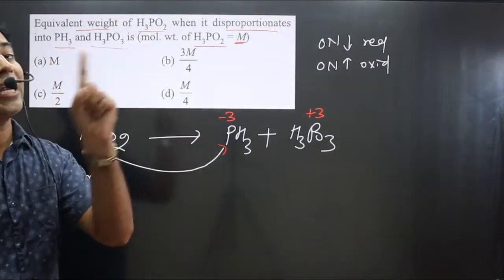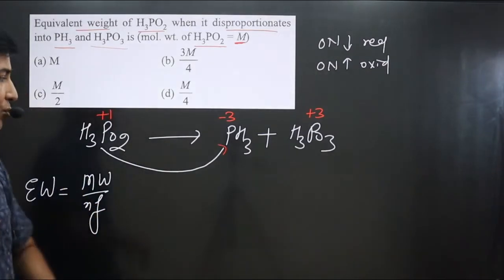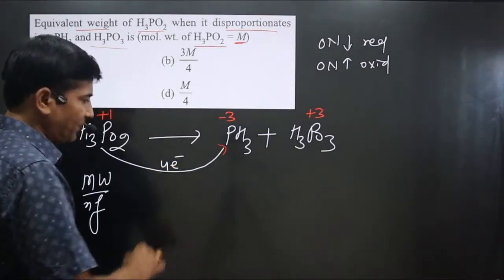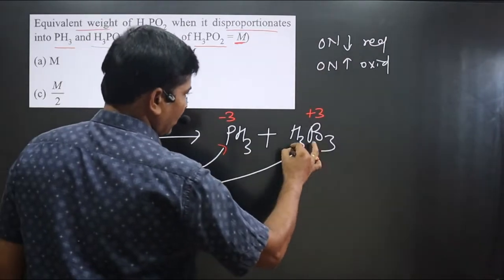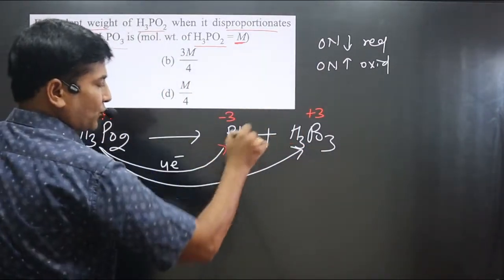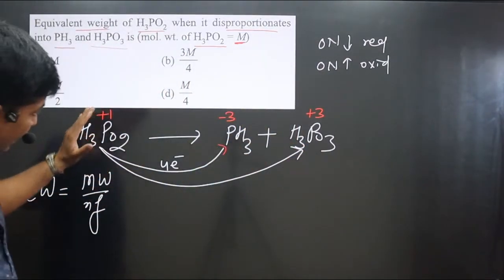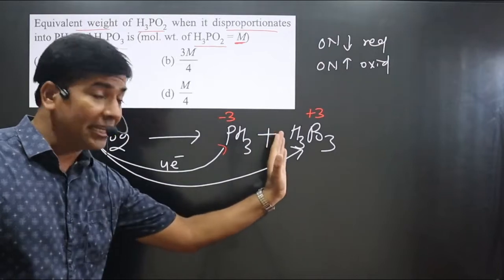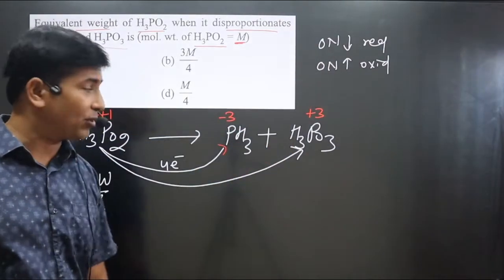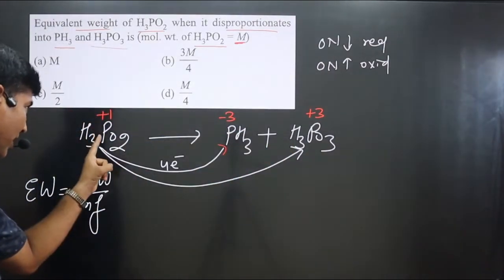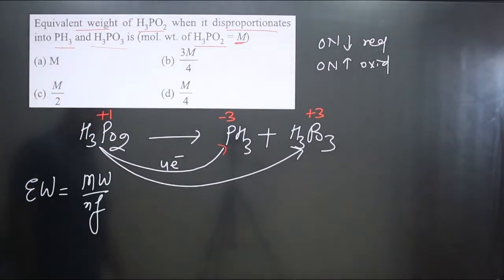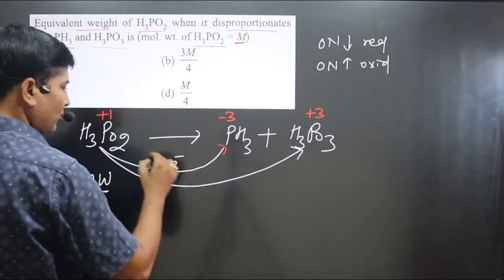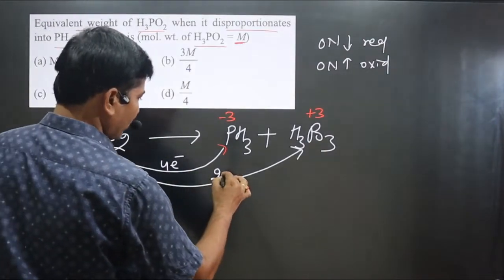The difference in oxidation number for reduction: +1 minus (-3) equals 4 electrons gained. For the oxidation step, phosphorus goes from +1 to +3 — an increase in oxidation number, which means oxidation. This confirms that a single element is undergoing both oxidation and reduction. The difference for oxidation: 3 minus 1 equals 2 electrons lost.